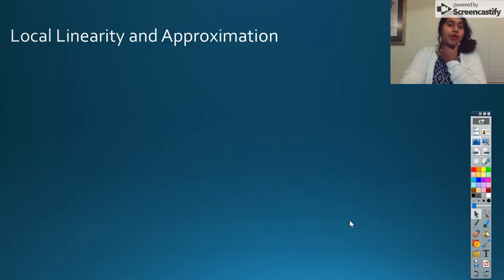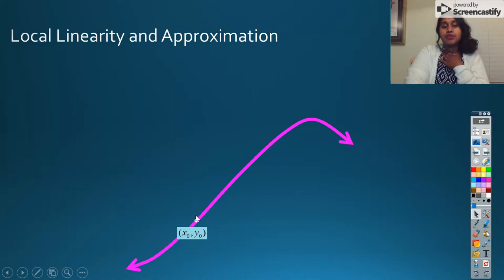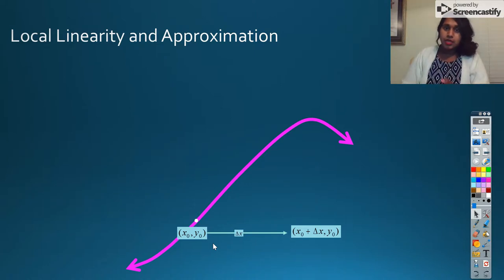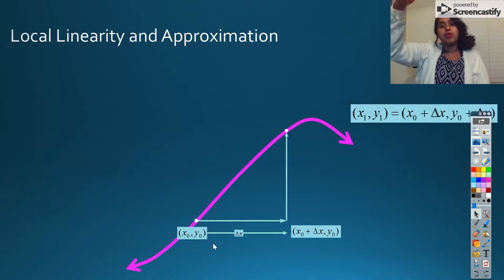Here's another visual representation of what I mean by local linearity and approximation. If we have some function and we have an original value of X naught, Y naught, so that means X original, Y original. If I look at it moving to the right, we can call that delta X. So I can change. That means my X original plus delta X would be that next X value.